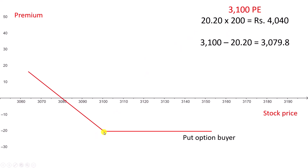Once it starts to move below 3100 rupees, I will start to earn back the premium that I had paid to the put option seller. Only when the price moves below 3079.8 will I start to make a profit. What is this value? Strike price 3100 minus the premium 20.20 gives 3079.8. Only when the stock starts to move below this price will I start to make a profit. Till 3079.8, I will be at a loss.